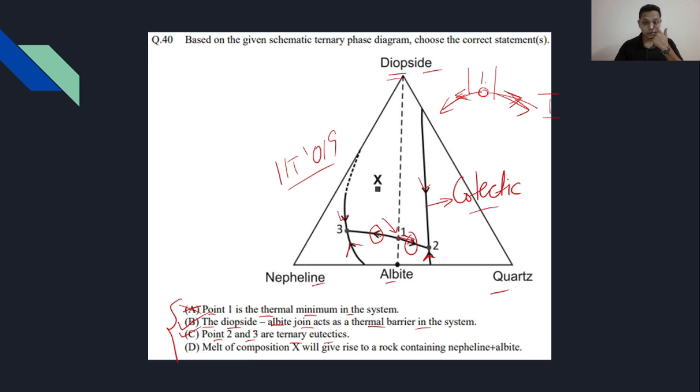The last option is melt of composition X. This is composition X will give rise to a rock containing nepheline and albite. This option is correct because any rock falling in this triangle of nepheline, albite, and diopside will definitely have these three minerals. The one falling in the albite-quartz-diopside region will never have nepheline. But this statement is only partially correct because it is saying nepheline plus albite, but it should also be diopside.